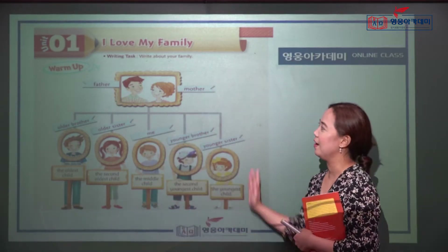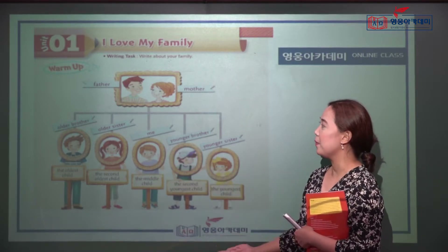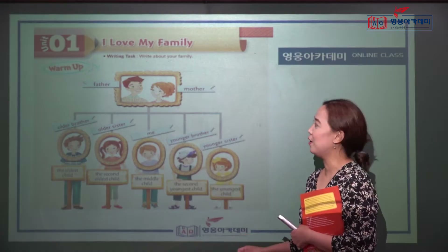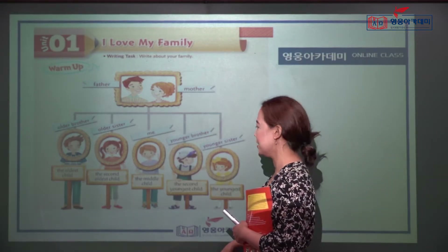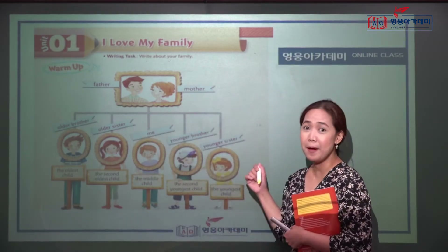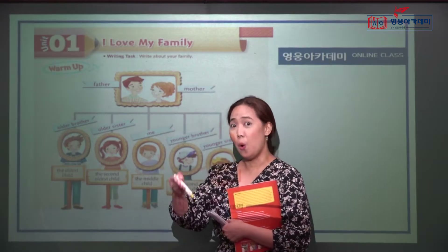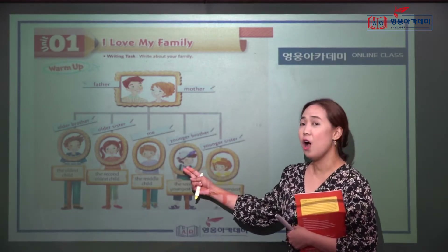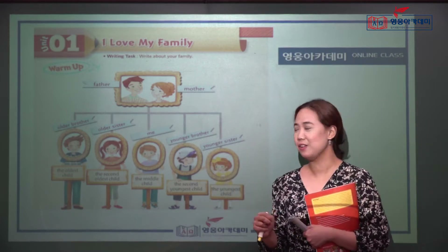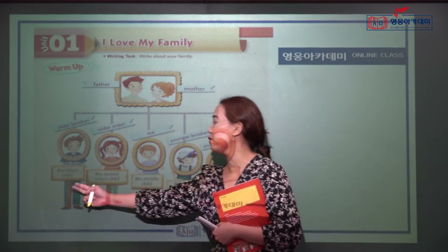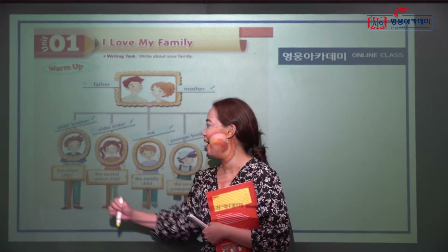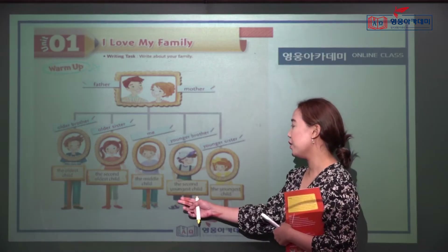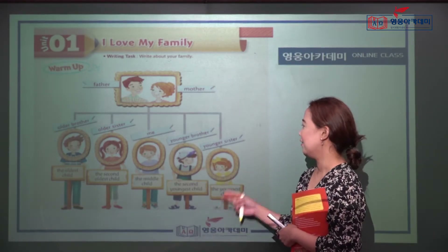Let's look at the picture. This is an example of a family talking about who's younger, older, and the youngest. You can see the father and the mother, an older brother, an older sister, me — this is you — and a younger brother and younger sister. You can say this boy is the oldest child, the second oldest, the middle child, the second youngest, and the youngest child.